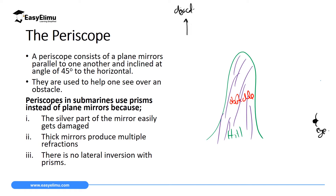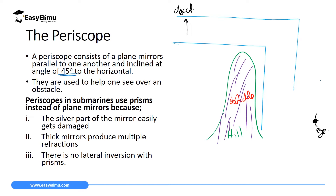A periscope contains two mirrors positioned at an angle of 45 degrees. These mirrors are arranged so that rays from the object are reflected to the first mirror, which reflects the ray to the second mirror, and the second mirror reflects the light to the eye. To sketch a periscope diagram, you need a hollow tube forming 90-degree corners — here is the upper part of the hollow tube, and here is the second part.